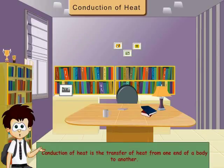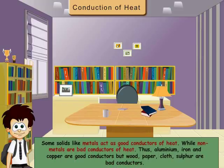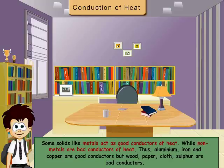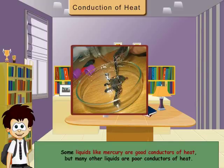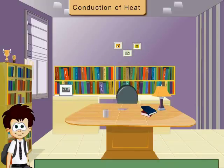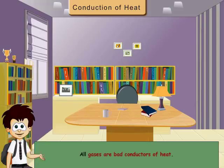Conduction of heat is the transfer of heat from one end of the body to another. Some solids, like metals, act as good conductors of heat, while non-metals are bad conductors of heat. Thus, aluminium, iron and copper are good conductors, but wood, paper, cloth, sulphur are bad conductors. Some liquids, like mercury, are good conductors of heat, but many other liquids are poor conductors. All gases are bad conductors of heat.